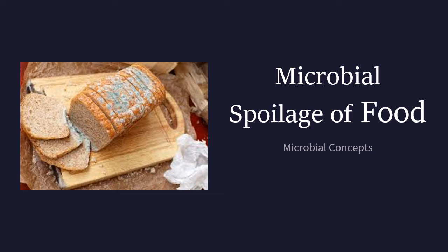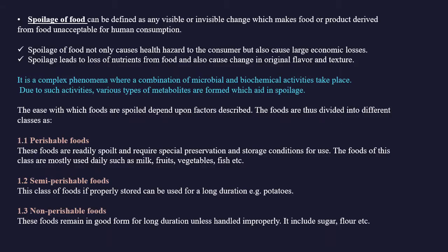Welcome back. Today we are going to discuss microbial spoilage of food. In your kitchen you must have observed some foods getting changes like unpleasant odor, texture changes, becoming slimy, or visible microbial growth. Spoilage of food can be defined as any visible or invisible change which makes food or products derived from food unacceptable for human consumption. Consuming spoiled food items can cause illness.